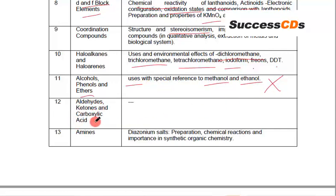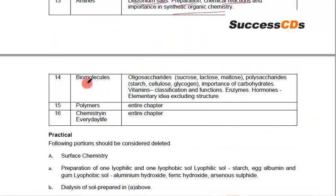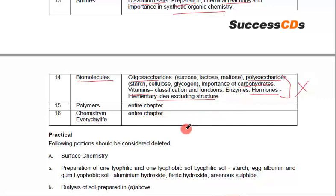From Aldehydes, Ketones and Carboxylic Acids: nothing has been deleted — the entire chapter is included. From Amines: diazonium salts — preparation, chemical reactions, and importance in synthetic organic chemistry — deleted. From Biomolecules: oligosaccharides, polysaccharides, importance of carbohydrates, vitamins (classification and functions), enzymes, and hormones (elementary idea, excluding structure) — deleted. The entire chapter on Polymers has been deleted. The entire chapter on Chemistry in Everyday Life has also been deleted.